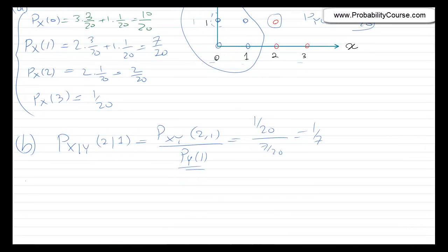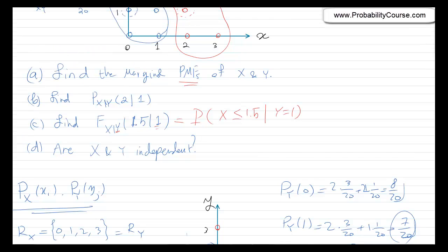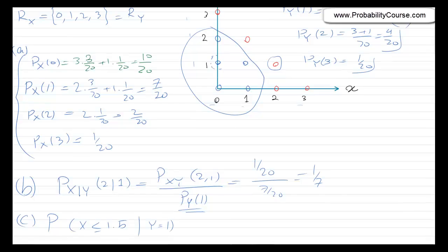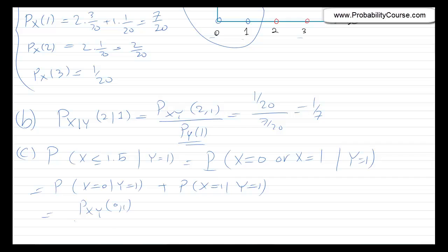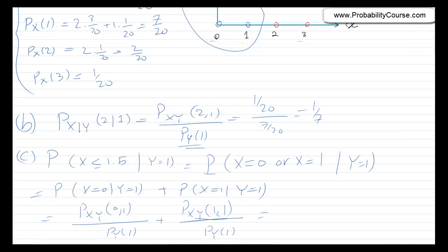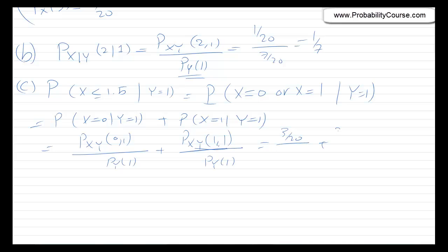Part c asks for F_{X|Y}(1.5 | 1), the probability that X ≤ 1.5 given Y = 1. Since X takes values {0,1,2,3}, this is P(X=0 or X=1 | Y=1), which equals P_{XY}(0,1)/P_Y(1) + P_{XY}(1,1)/P_Y(1). Both joint probabilities are 3/20, giving (3/20 + 3/20)/(7/20) = 6/7.